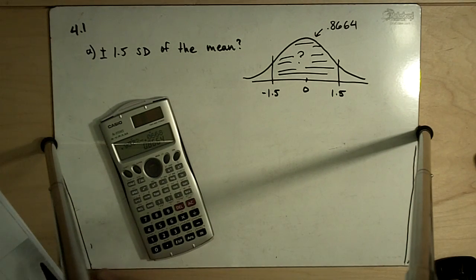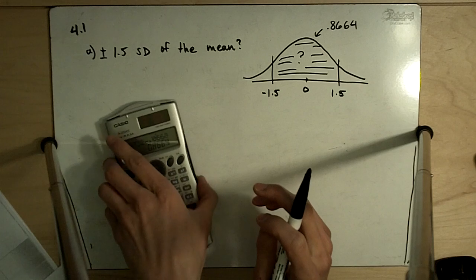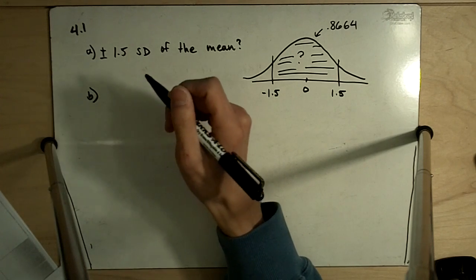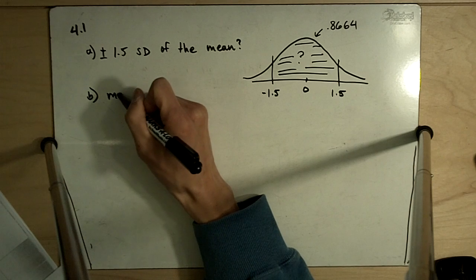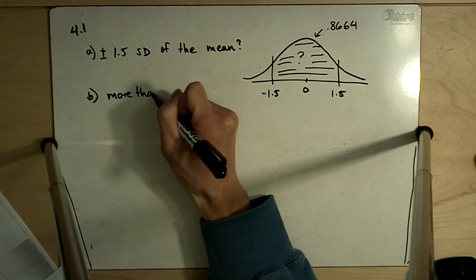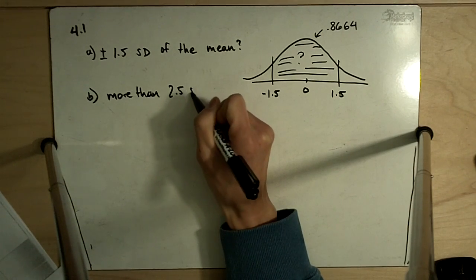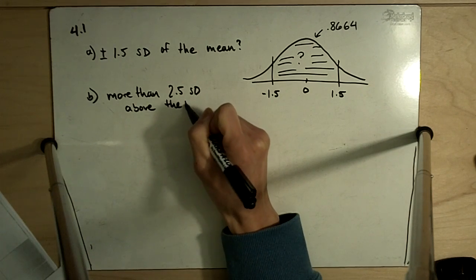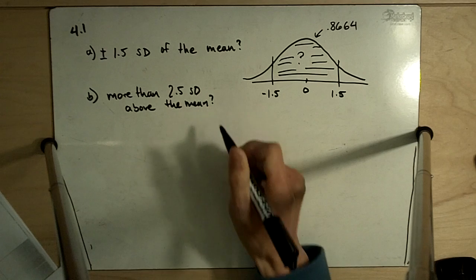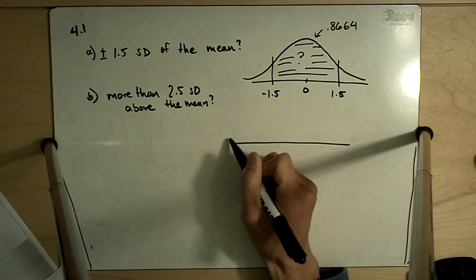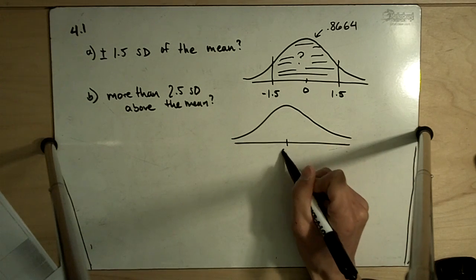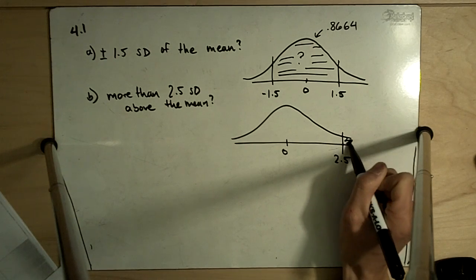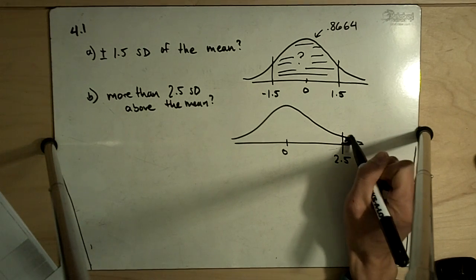Part B asks: more than 2.5 standard deviations above the mean. In this case, we're at 0, and we go out 2.5 standard deviations, and we want to know what's out here.